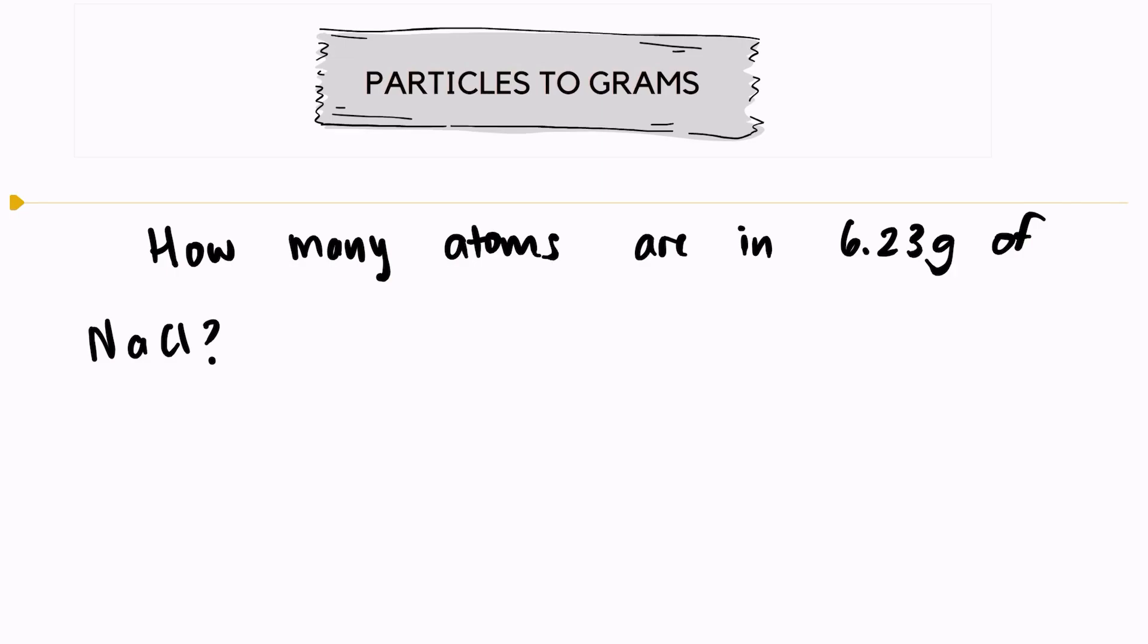We want to know how many atoms are in 6.23 grams of NaCl. So there's a few things we need to think about here.